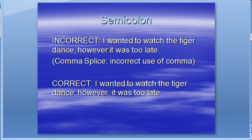An incorrect use would be: 'I wanted to watch the tiger dance, however, it was too late.' That's a comma splice — using a comma where you really need a semicolon. To correct it, you would write: 'I wanted to watch the tiger dance; however, it was too late.'